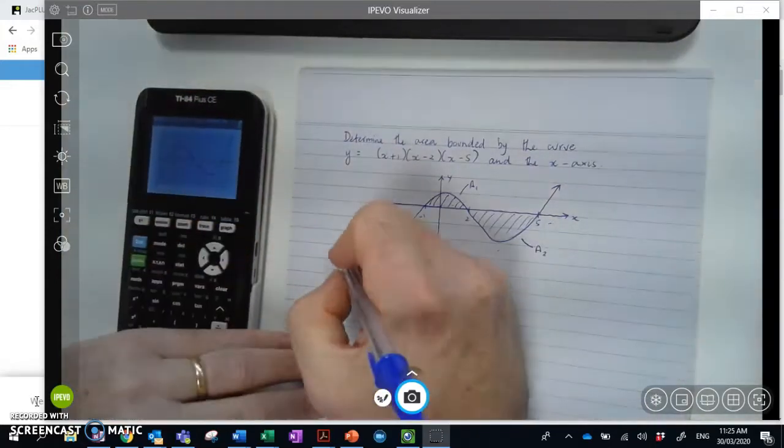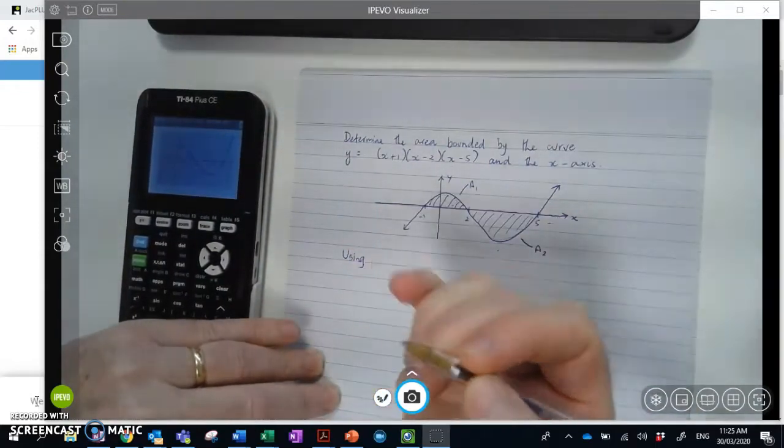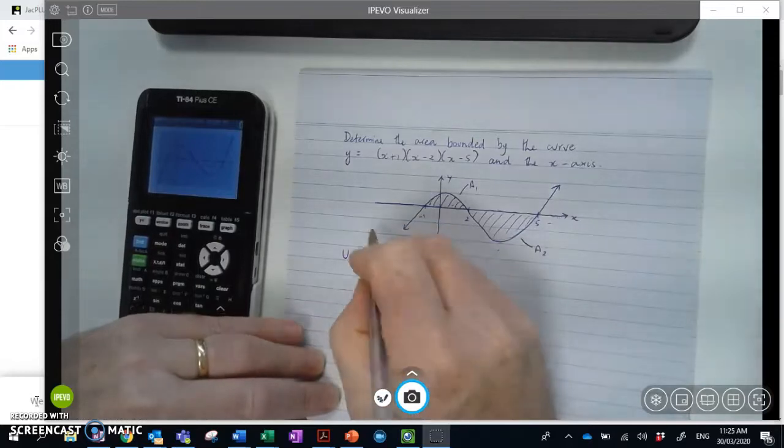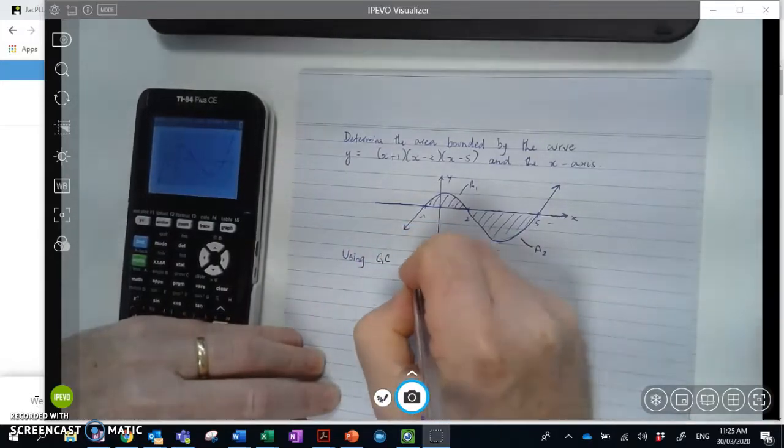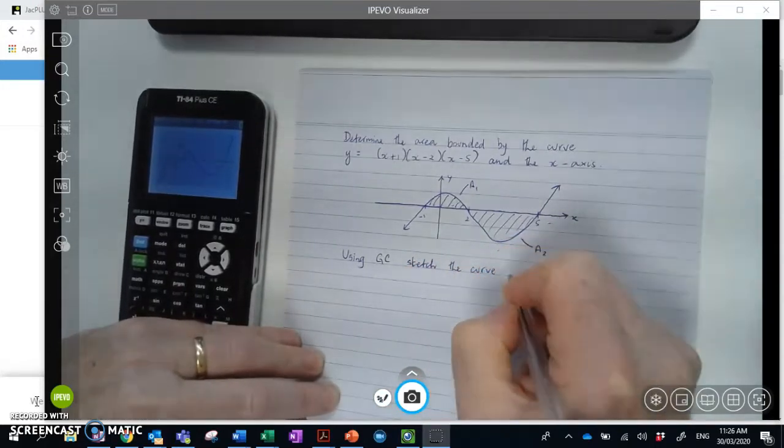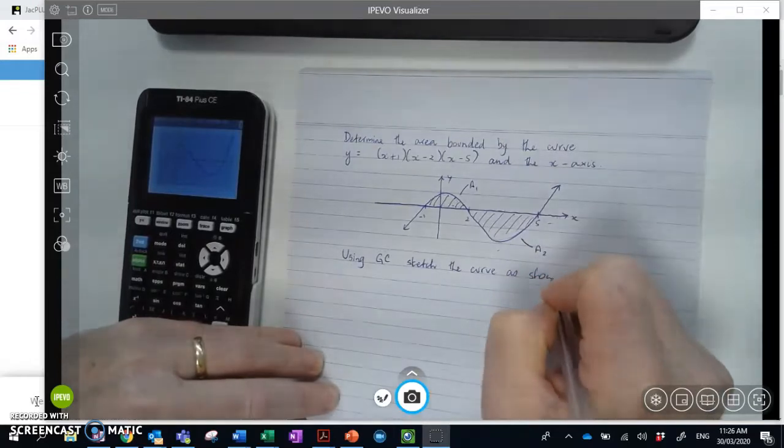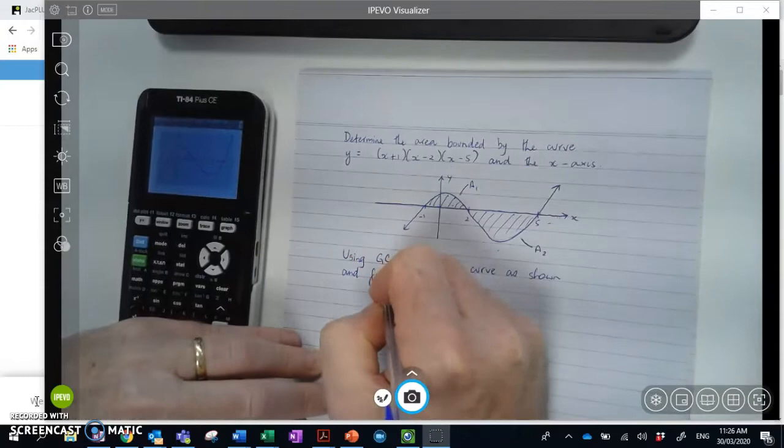So I'm going to say, and this is perhaps one way you could put it down in your response on the exam should be asked, something like this. So using GC, sketch a curve as shown and find points of intersection.